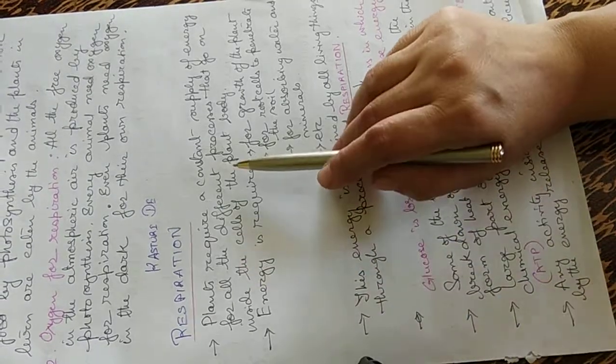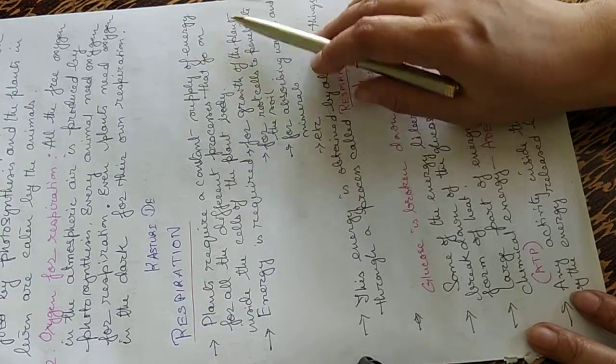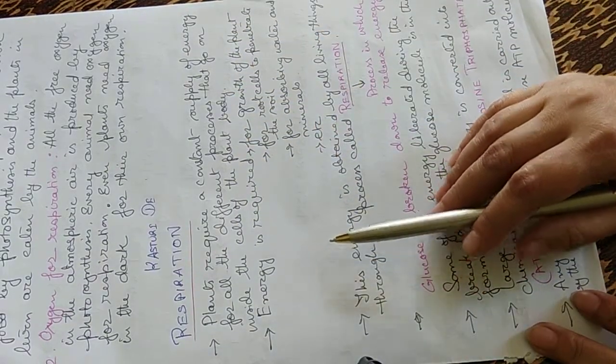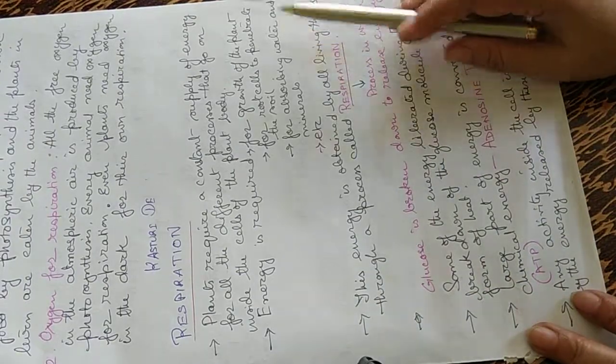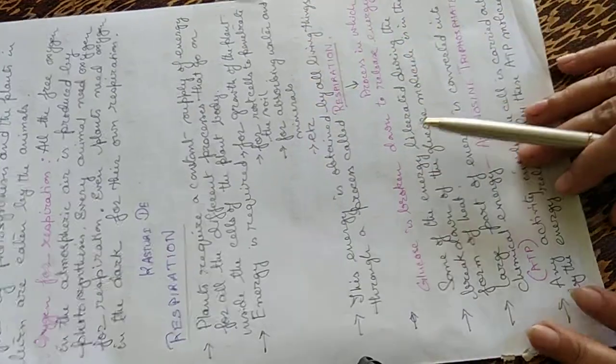Now plants require a constant supply of energy for all the different processes that go on inside the cells of the plant body. Energy is required for growth of the plant, for root cells to penetrate the soil, for absorbing water and minerals.